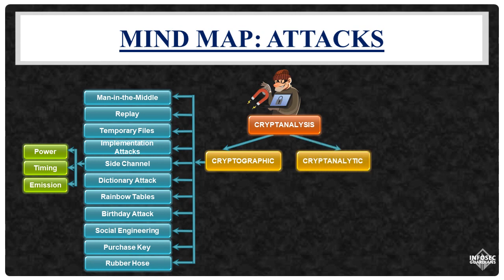Cryptoanalytic attacks specifically focus on deducing or discovering the cryptographic key used in an encryption or decryption process. The goal is to break the encryption by uncovering the key, thereby gaining access to the plain text from ciphertext. Cryptoanalytic attacks include methods like brute force attacks, chosen plain text attacks, and known plain text attacks.